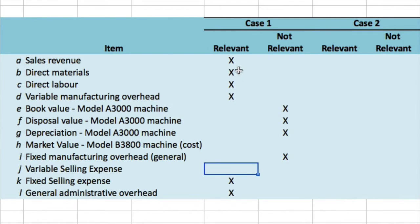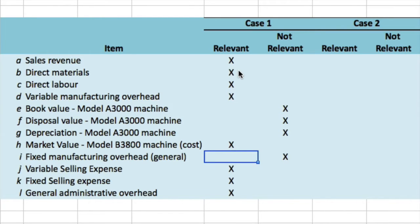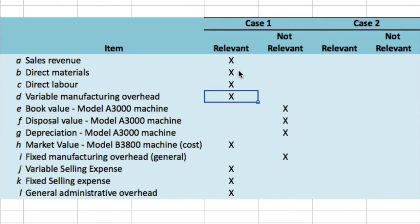There's variable selling expense as well. What about buying the new unit? If we don't buy it, we don't have to pay for it — so it is a differential cost. Looking down that list, everything dealing with items E, F, G, and H are correct. Items A, B, C, and D — all the variable costs and sales revenue — are relevant because the increase in sales volume will also increase fixed selling and general administrative overhead, and all variable costs for each incremental unit will be incurred.